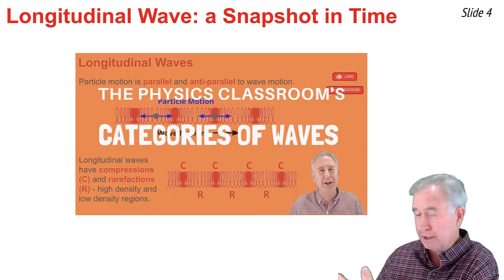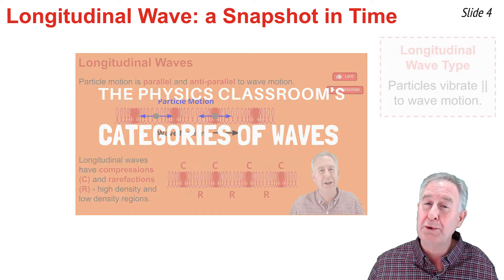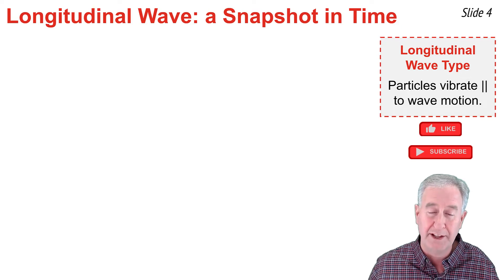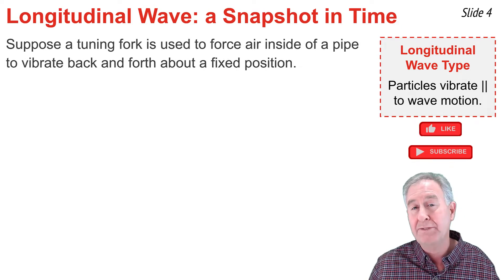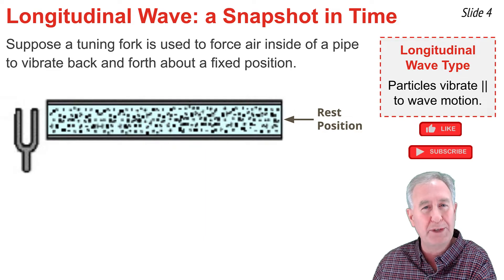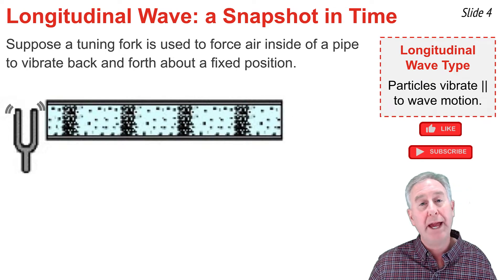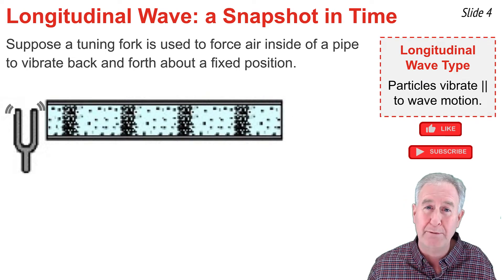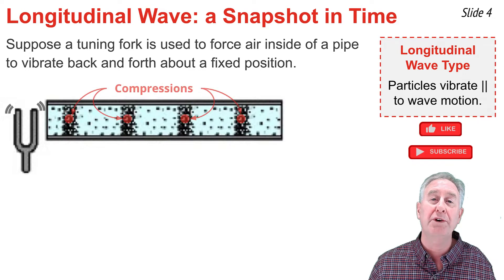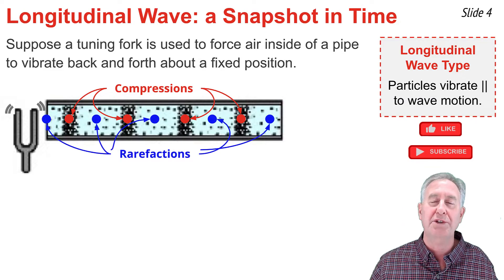In a previous video I discussed longitudinal waves — there's a link in the description if you need to review. A longitudinal wave is one in which particles vibrate back and forth parallel to the direction the wave is moving. If a tuning fork sends vibrations through a pipe of air, a pattern of compressions (regions where air particles are densely packed) and rarefactions (regions where the air is less densely packed) is established inside the pipe.